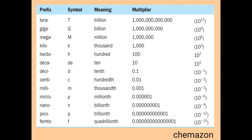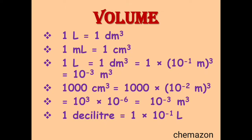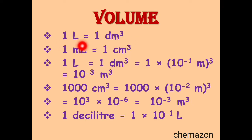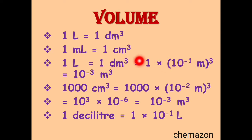Volume is a very important physical property of not only gases but liquids. 1 litre is 1 decimetre cube — you must know this. 1 ml is 1 centimetre cube. From our previous table, 1 decimetre is 10 raised to minus 1 meter, so the whole cube gives 10 raised to minus 3 meter cube.